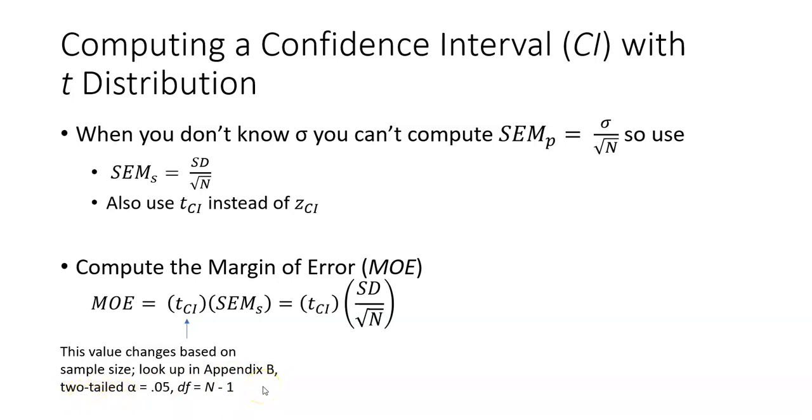Appendix B has two tables. You want to make sure you're using the two-tailed table. You're looking under the alpha 0.05, and you're going to look up in the row for the DF, which is N minus 1, the sample size minus 1. So I'll show you what I mean here.